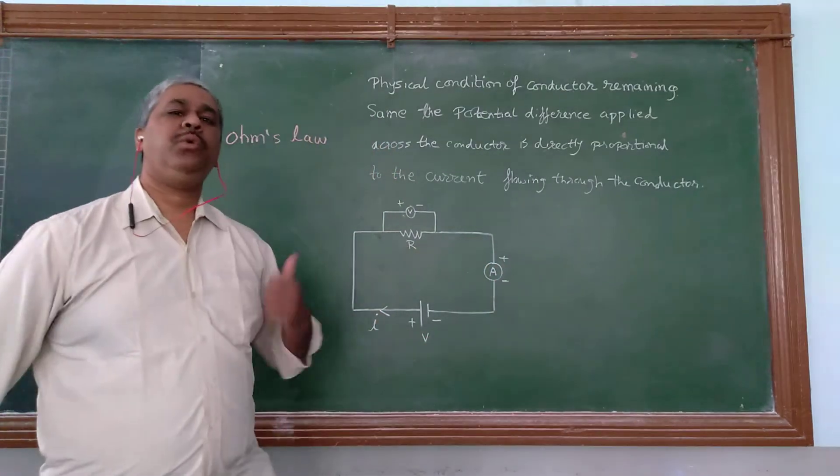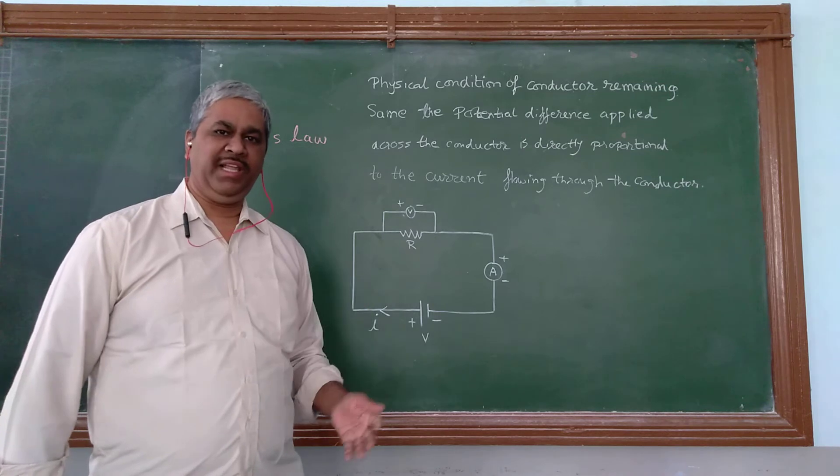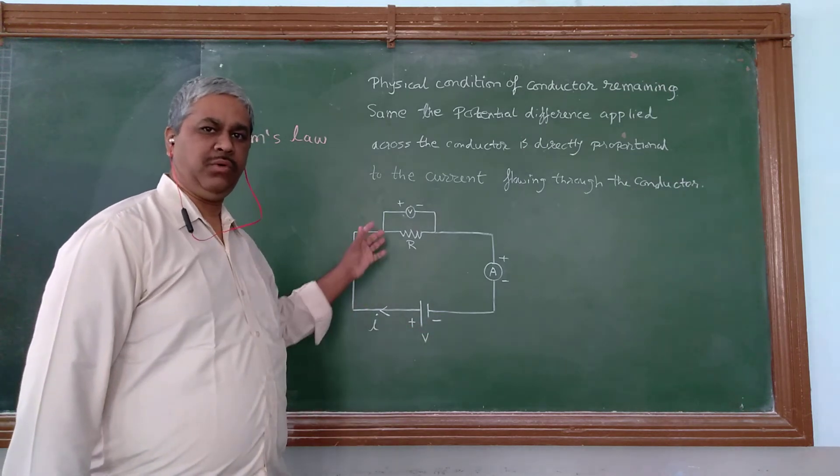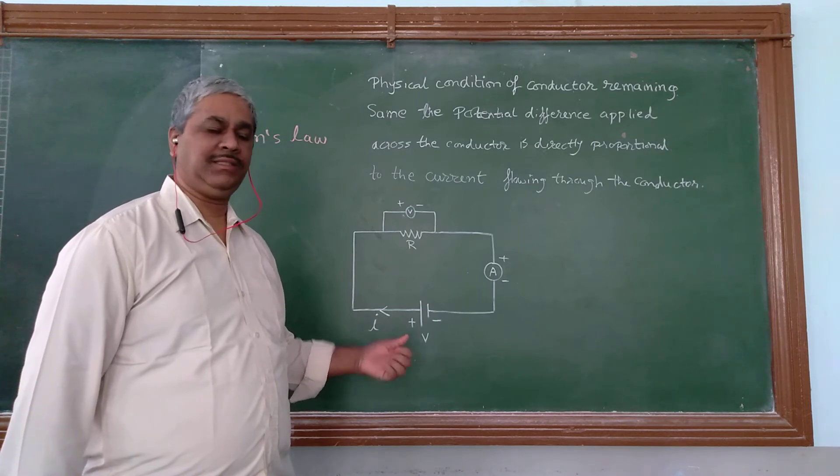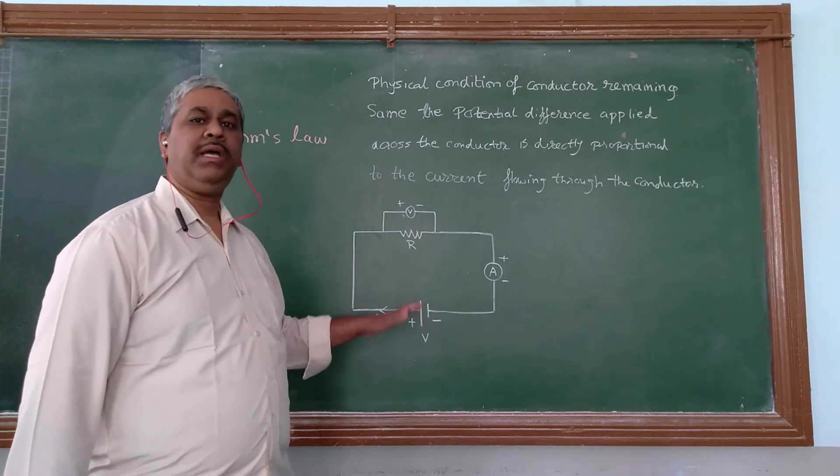And since we want to take two to three readings of this particular Ohm's law, we need to have a variable resistance. For that, we are going to use a rheostat.